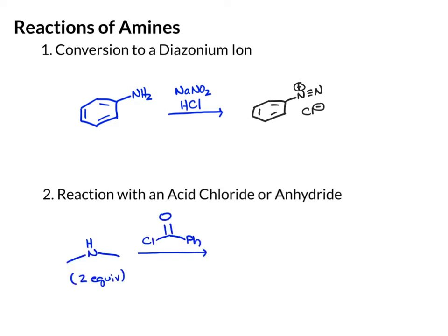The next reaction is reaction of an amine with an acid chloride or anhydride. When we're doing this, we're using two equivalents of amine. We can use primary or secondary amines in this reaction. The net result is you lose the H and Cl, and the nitrogen bonds to the carbonyl carbon to give us an amide. So the product would have our carbonyl with the phenyl on it, and then a bond to the nitrogen with the two methyl groups — the product is an amide.